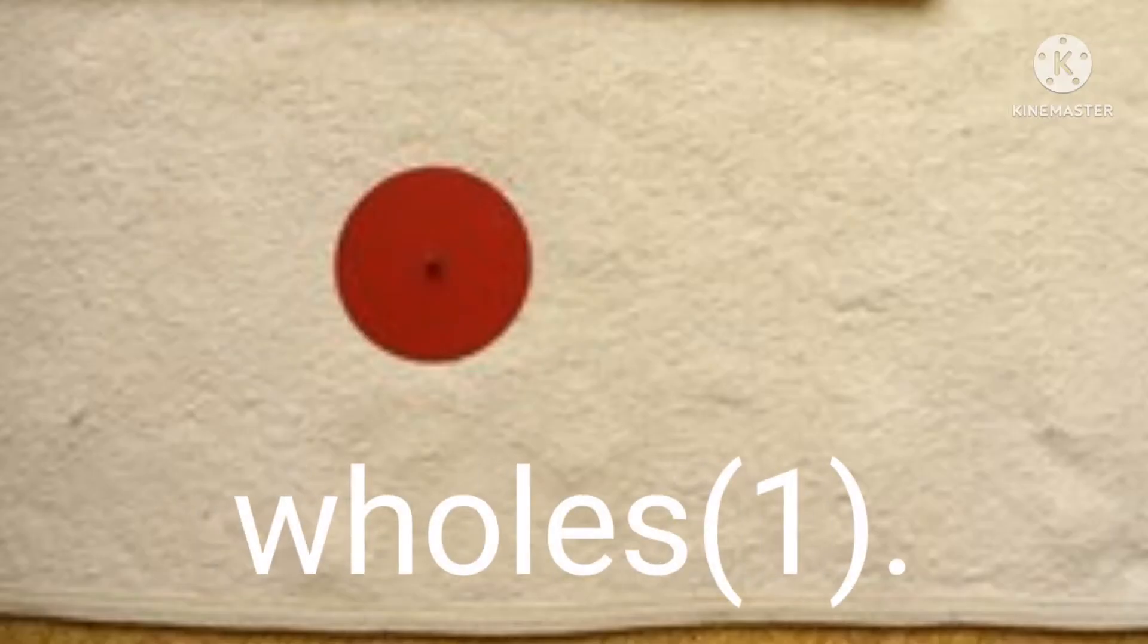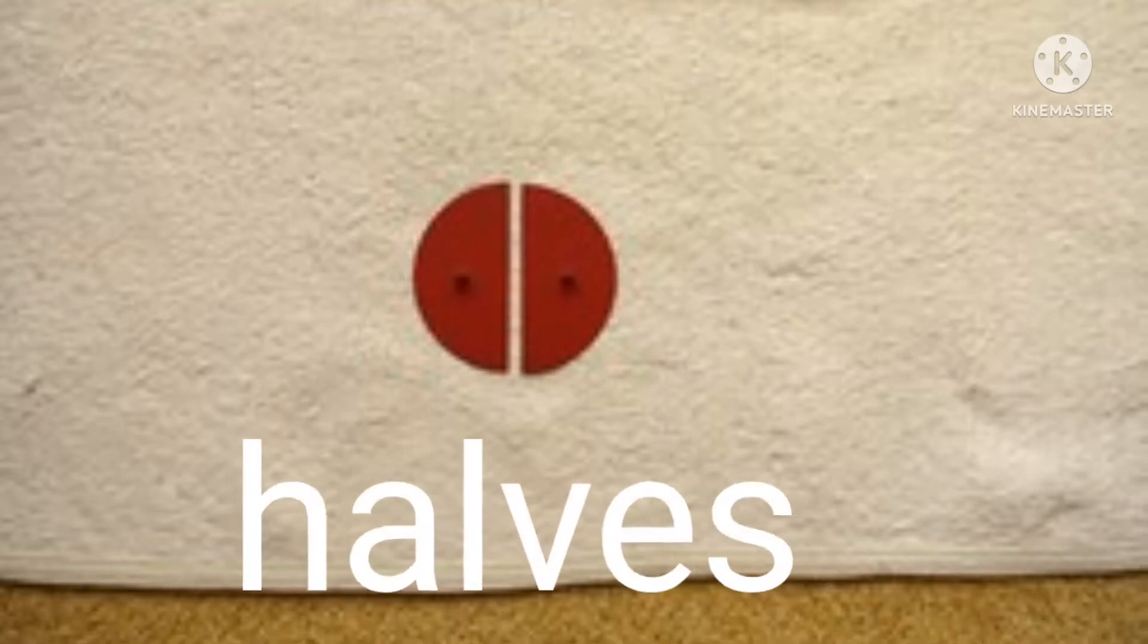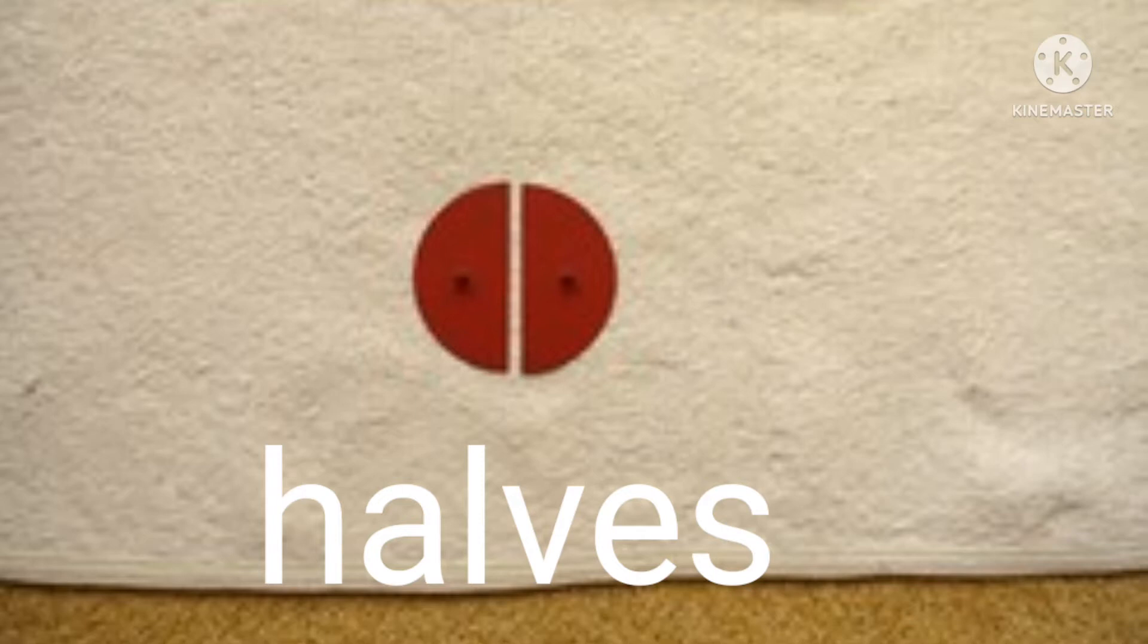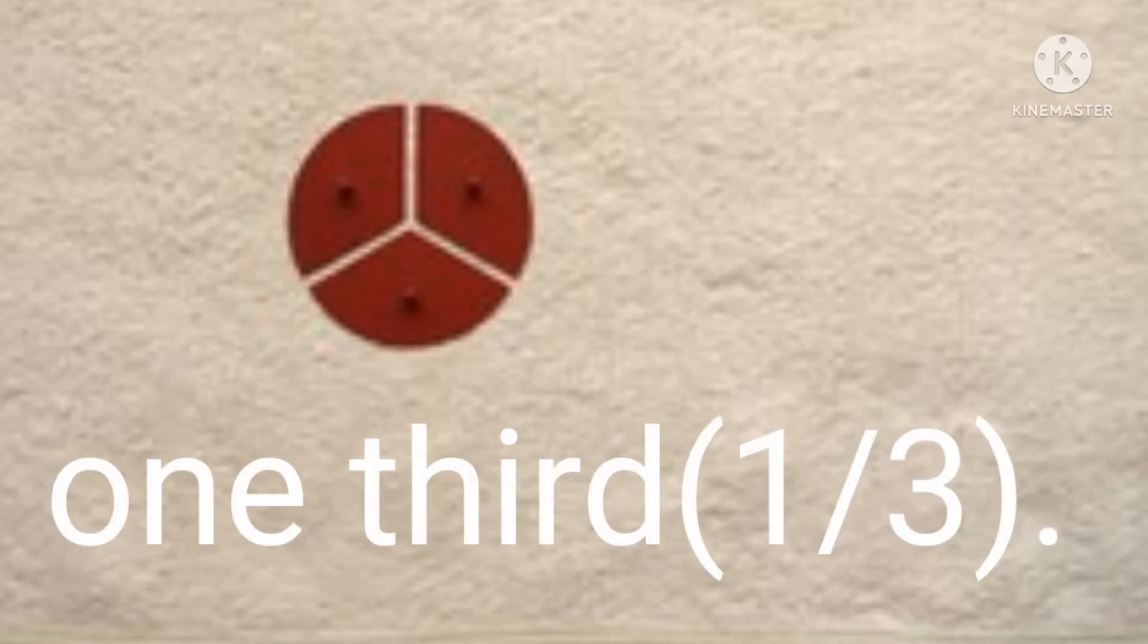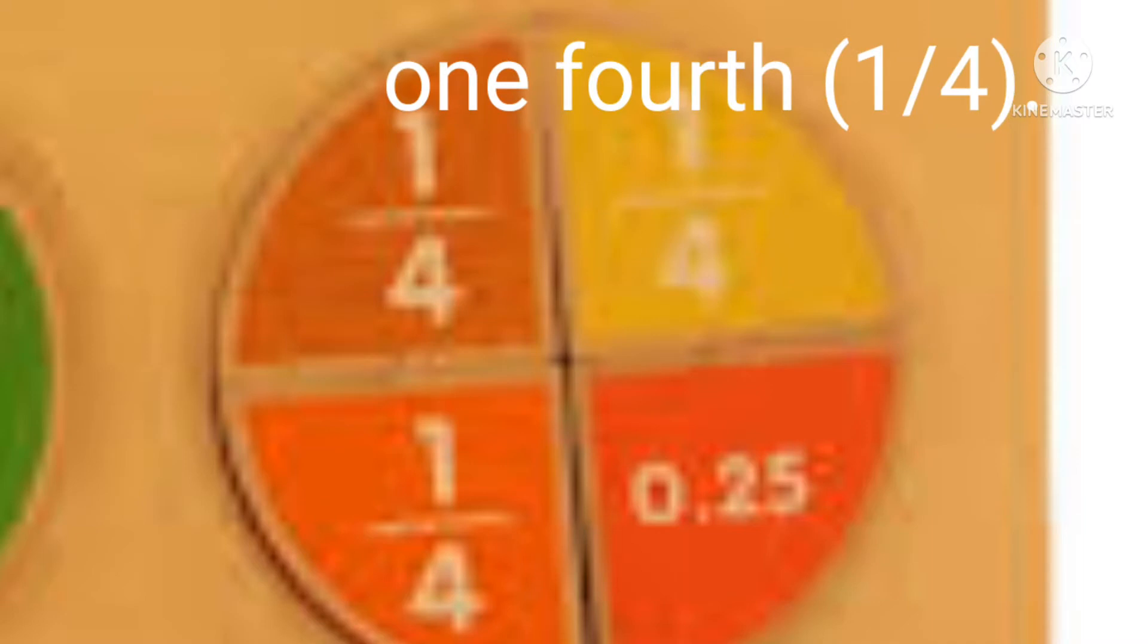This is the whole. The whole means everything. You've not divided it. While the halves is when you divide it into two equal parts. The one third is when you divide it into three equal parts. The one fourth is when you divide it into four equal parts.